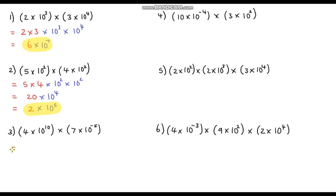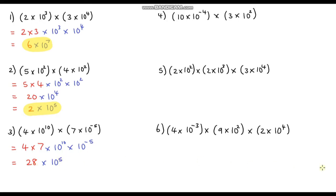Question 3: grouping the single numbers together — 4 times 7 gives 28. Then for the powers of 10: 10 to the power 10 times 10 to the power negative 5 gives 10 to the power 10 plus negative 5, which is 5. So we've got 28 times 10 to the power 5. Since 28 is not between 1 and 10, we divide by 10 to get 2.8, and multiply the power by 10 to get 10 to the power 6. So the final answer is 2.8 times 10 to the power 6.